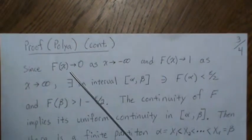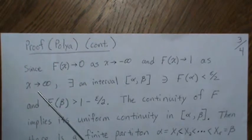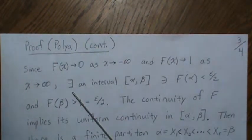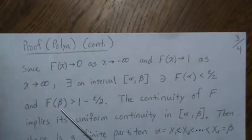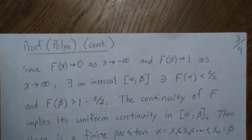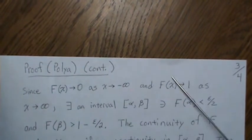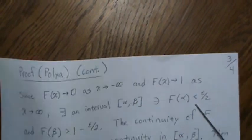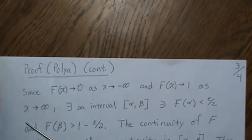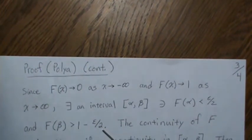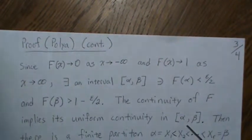By definition, the CDF goes to zero as x goes to negative infinity and goes to one as x goes to positive infinity. So there exists an interval [α, β] such that F(x) < ε/2 for x less than α, and 1 - F(x) < ε/2 for x greater than β. The CDF gets really close to one, so there's some cutoff where the difference is really small. We pick α and β such that being outside that interval keeps things really small.